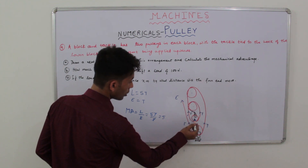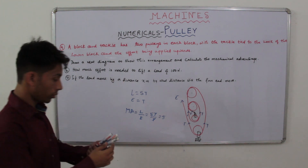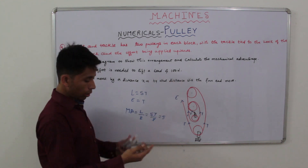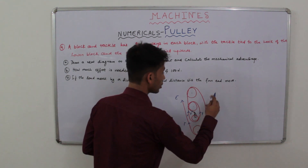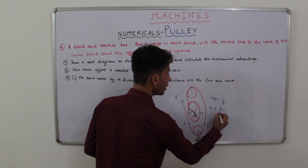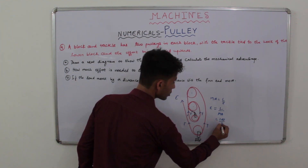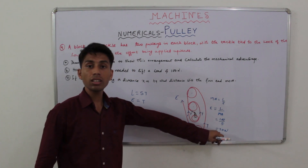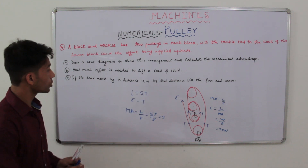How much effort is needed to lift a load of 100 Newton? Mechanical advantage equals 5 and load is 100 Newton. Effort equals load divided by mechanical advantage, so effort equals 100 divided by 5 equals 20 Newton. By giving just 20 Newton of effort you can lift a 100 Newton load. That is the advantage of this kind of system.